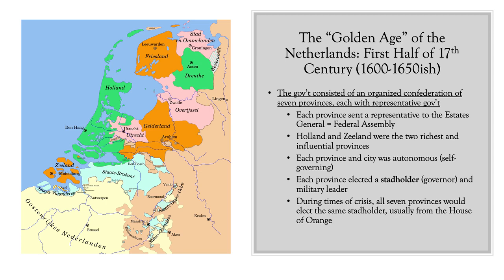During times of crisis — like when they were at war and being invaded by the French or attacked by the English — all seven provinces would elect the same stadholder, a single executive with more power than usual. This special stadholder was almost always from the House of Orange, one of the more powerful families in Dutch history. The current Dutch monarchy is actually part of the House of Orange. The House of Orange frequently tried to push the Dutch Republic toward greater centralization because they wanted to establish a hereditary monarchy — William, the stadholder from the House of Orange who participated in England's Glorious Revolution, had wanted a monarchy in the Netherlands but got one in England instead.